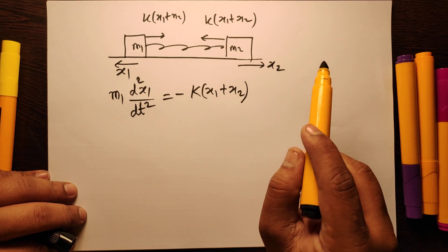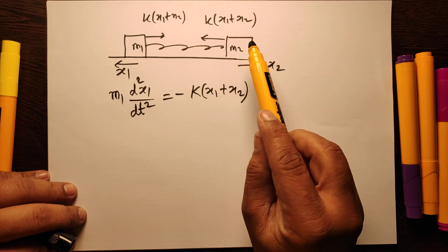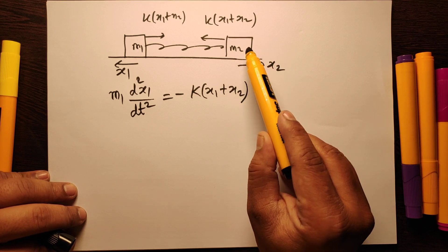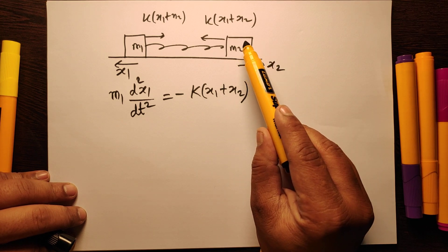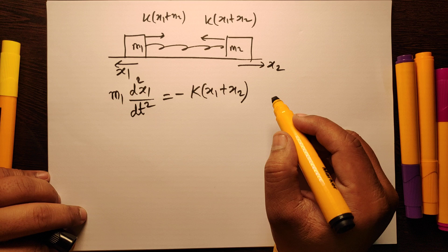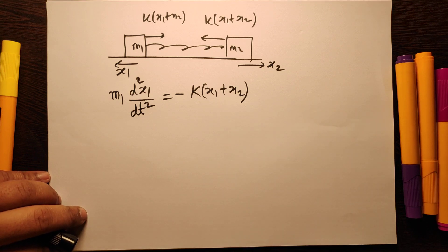I also could have applied Newton's law on the right block, then I would have written m2 d²x2/dt² is equal to minus k into x1 plus x2. It means the same thing, you will reach the same answer.